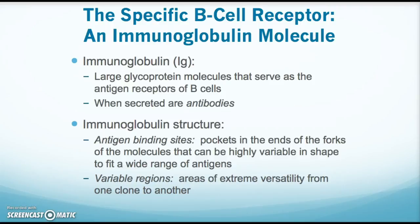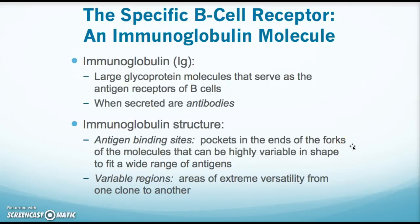Immunoglobulins are glycoprotein molecules that serve as receptors on B cells, and they can also be secreted as antibodies. The immunoglobulin structure looks like a Y shape, and it is the pockets at the ends — the fork of that Y — that are very variable and can change shape to fit any kind of antigen. Within those antigen binding regions there is a portion called the variable region, which is where we see huge differences from one clone to another, allowing specificity for any antigen presented.